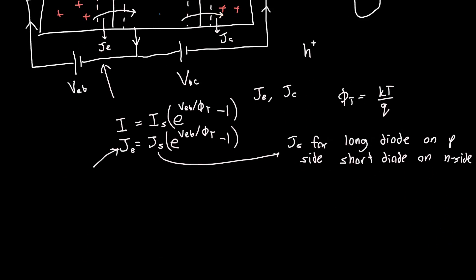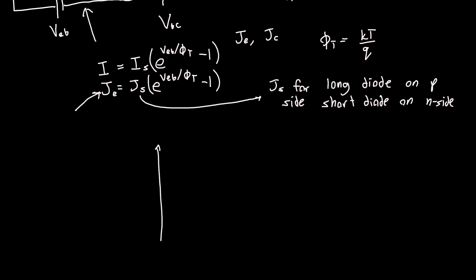Now there's just one slight subtlety. This JS is JS for a long diode on the P side and a short diode on the N side. Because previously we said that our hole distribution within the base looked something like this, just a straight line. This is the junction on the left-hand side and this is the junction on the right-hand side.